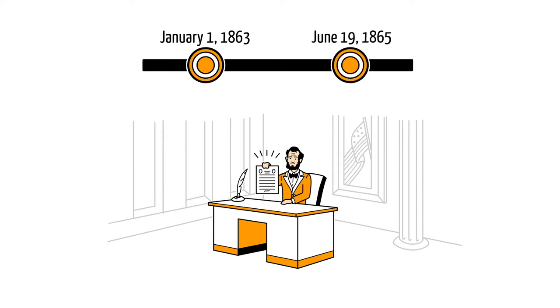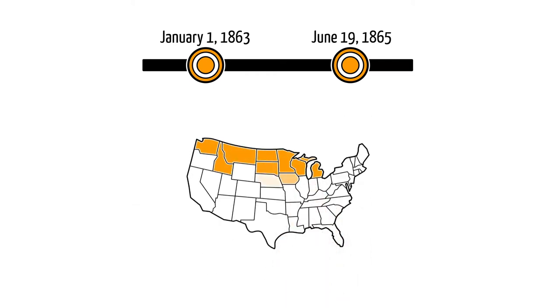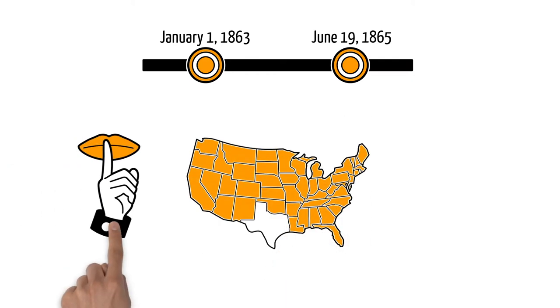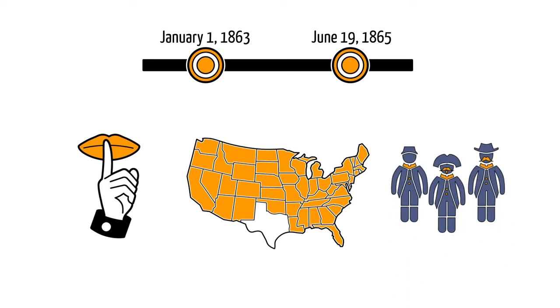Some say this was because news was slow to spread. Others say that the information was withheld from slaves, and others say that, in some states, there weren't enough Union soldiers to enforce the order.